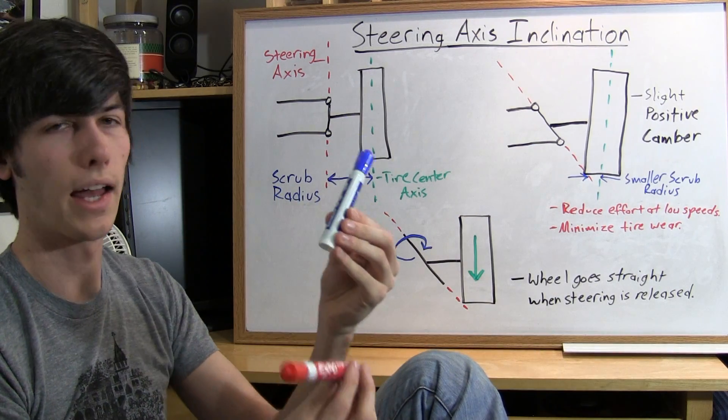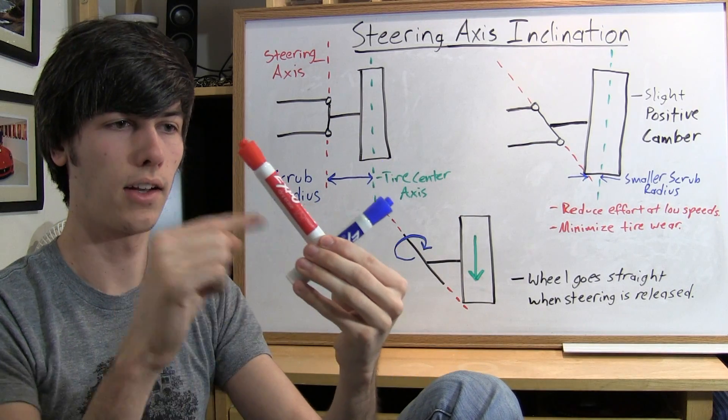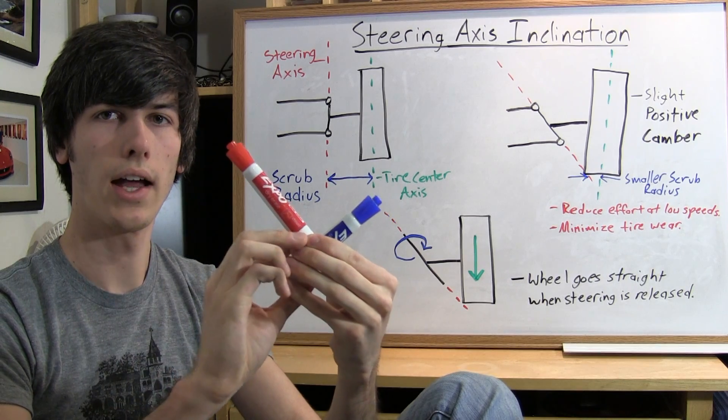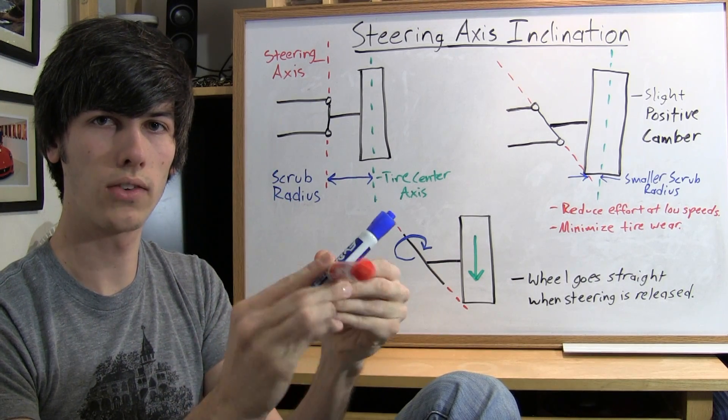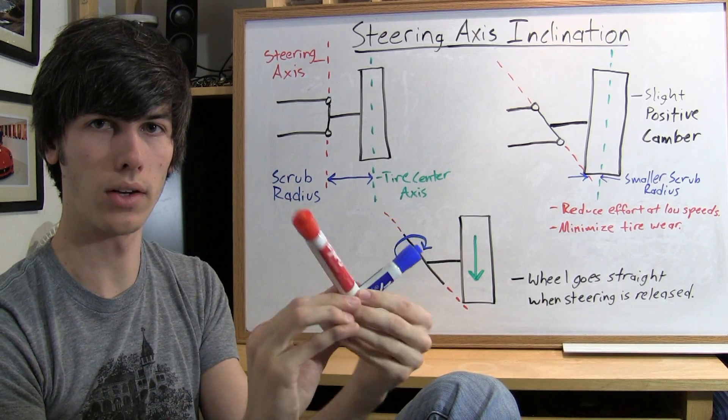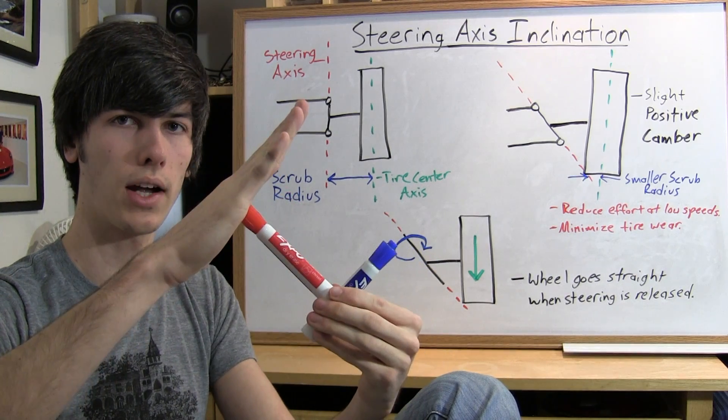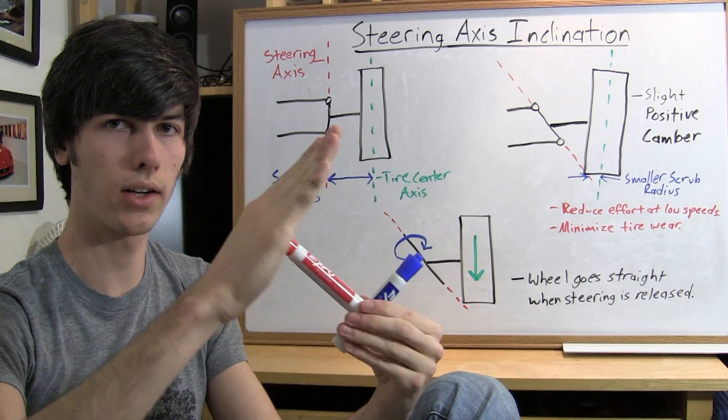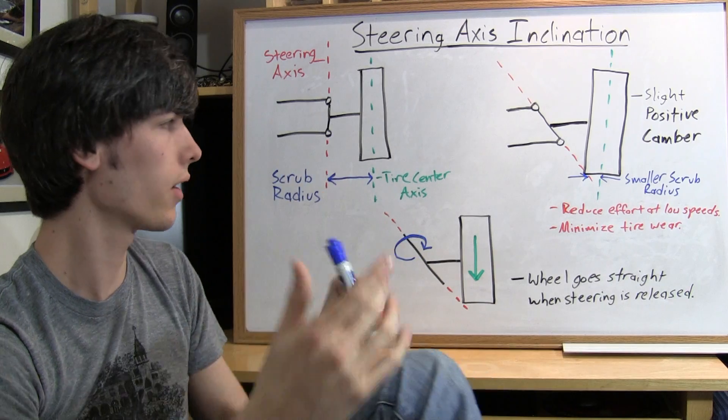So if you have this and it's at an incline and then this is going to your tire and you rotate this you can see that the red marker is going down. That's going to be your tire. If your tire's here and you rotate that steering axis it's going to force the tire to go downward.